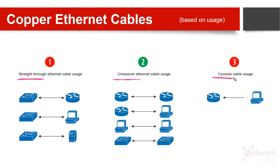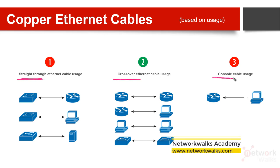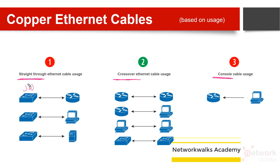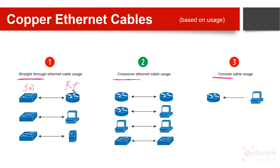A straight-through cable is used whenever the devices on the two ends of the cable are different. For example, on one side it's a layer two switch and on the other side it's a router. Similarly, if one side is a switch and the other side is a PC, computer, or server — computers, routers, servers, and mobile phones are all end devices that belong to the same category.